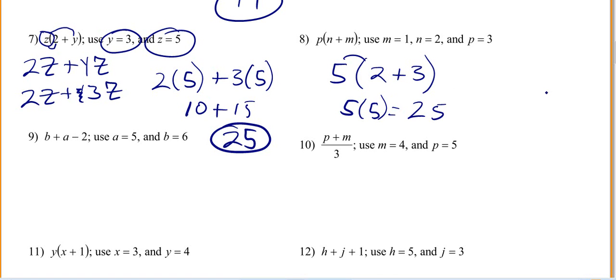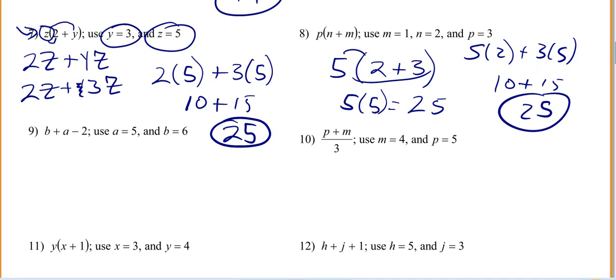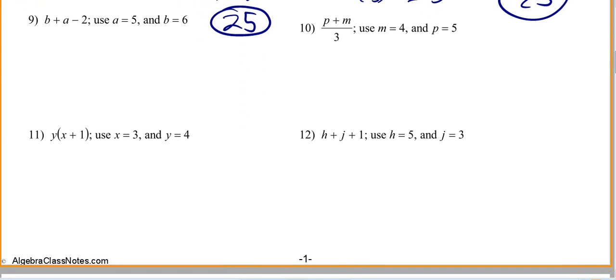Or if you wanted to distribute your 5 for fun, you'd have 5 times 2 plus 3 times 5. Then you got 10 plus 15, which once again is 25. So multiple ways to approach this problem at number 7. I would practice the different ways I showed you and then concentrate on what works best for you.